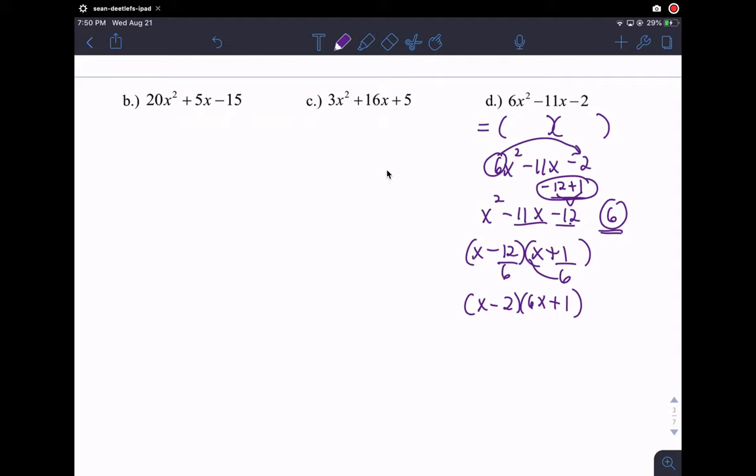And now we want to foil this to make sure it worked. So that would be 6x squared plus 1x minus 12x minus 2. And these two terms combine to give me minus 11x. So go check your original question. That worked, this worked, and that worked. And so that means the solution, again, not the scratch work, the solution is this right here. The factored form of that is x minus 2 and 6x plus 1. That's the solution to the question.